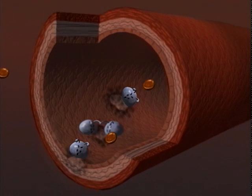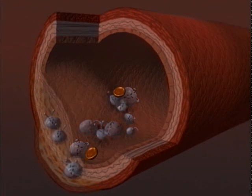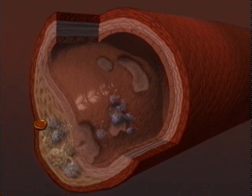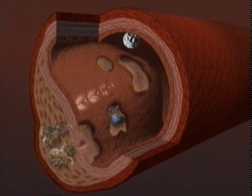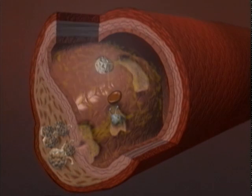Eventually the inflamed artery wall becomes thickened with scar tissue, cholesterol, calcium, and iron. This thickened region is now called a plaque. If the plaque becomes thick enough, blood flow through the artery is impaired.